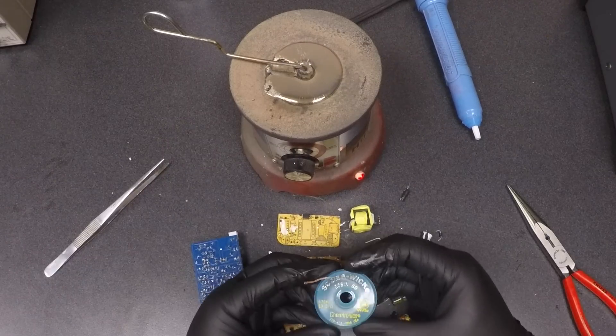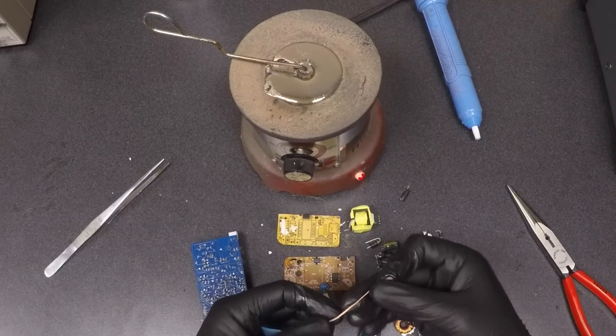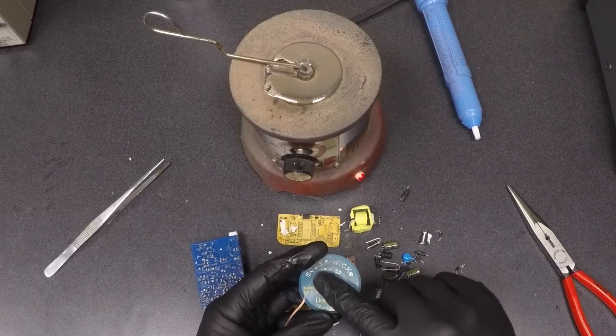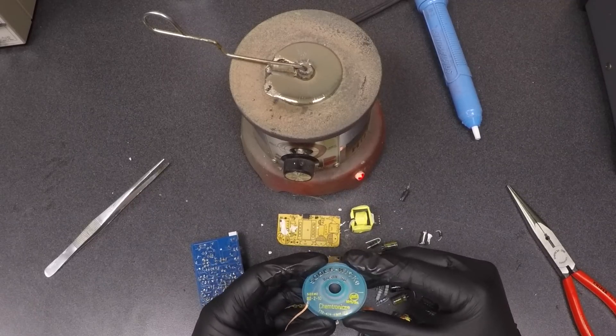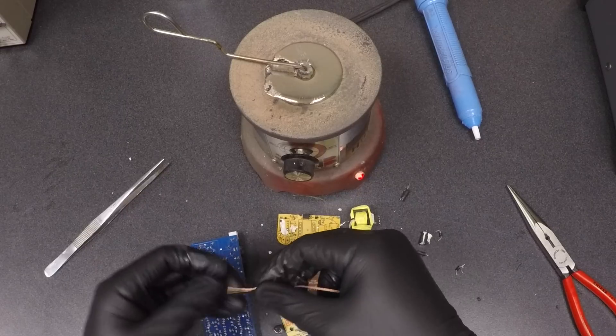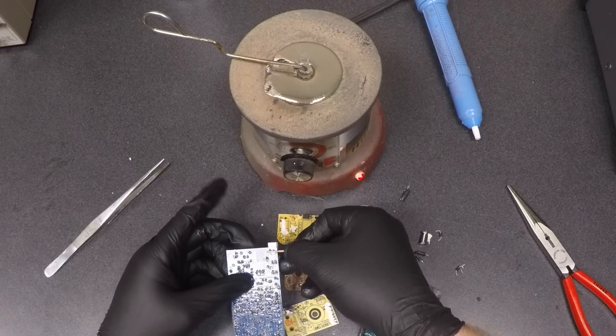If you don't have a solder sucker, you can use a solder wick, which I actually prefer. This is a copper braid that soaks up solder. Make sure whatever you buy is coated with flux, and if you bought cheaper solder wick, you can just make it better by coating it with flux yourself. All you do is hold it up to the joint with a soldering iron, and it will soak up all the solder.